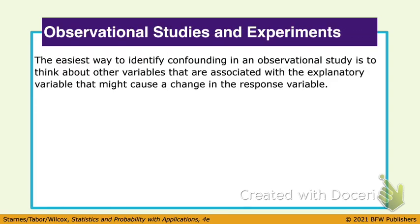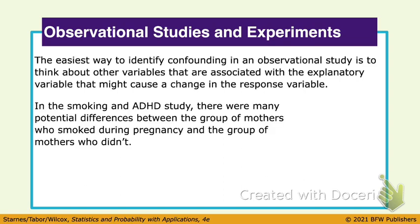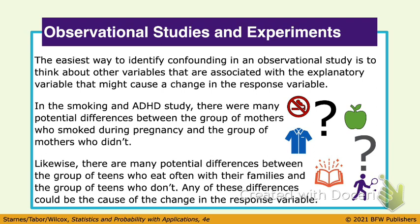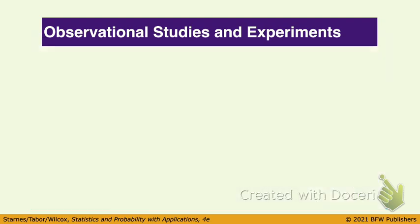The easiest way to identify confounding in an observational study is to think about other variables that are associated, like we just did. In the smoking example, there could be other factors — health, diet, hereditary things. With families eating together and grades, again, other factors. That's all confounding. Confounding is kind of a big word in stats.